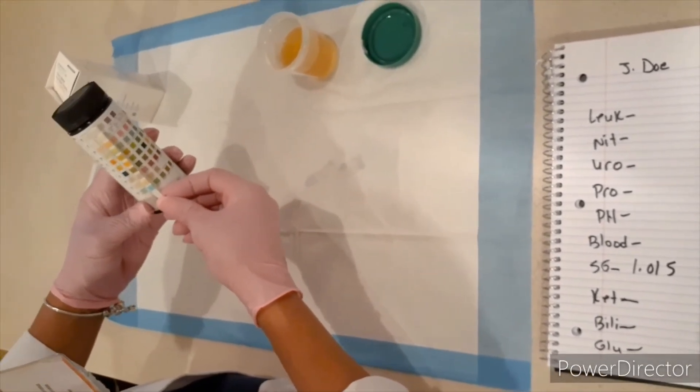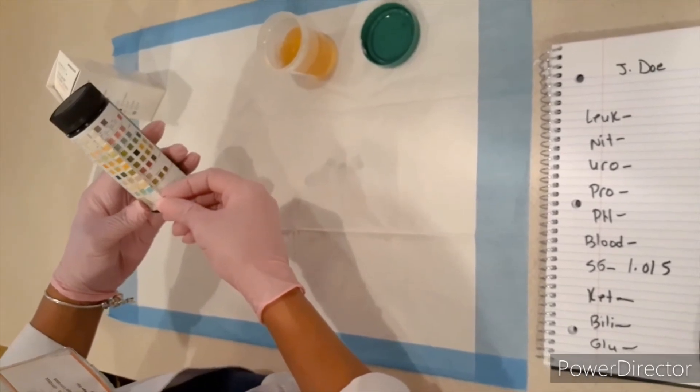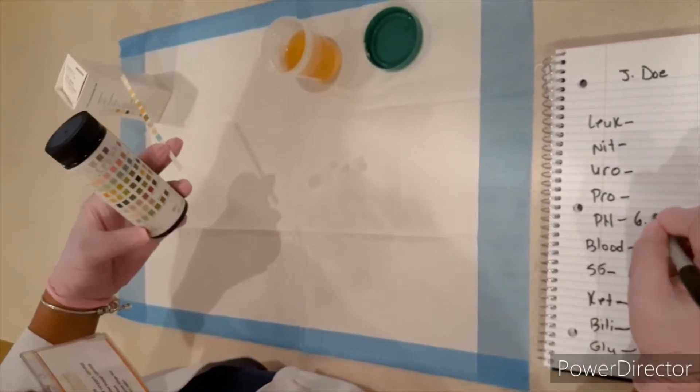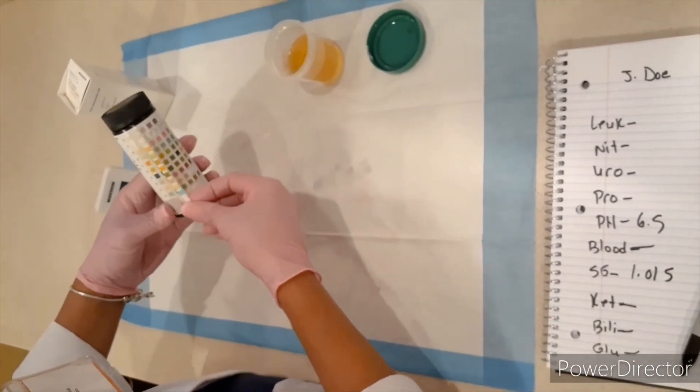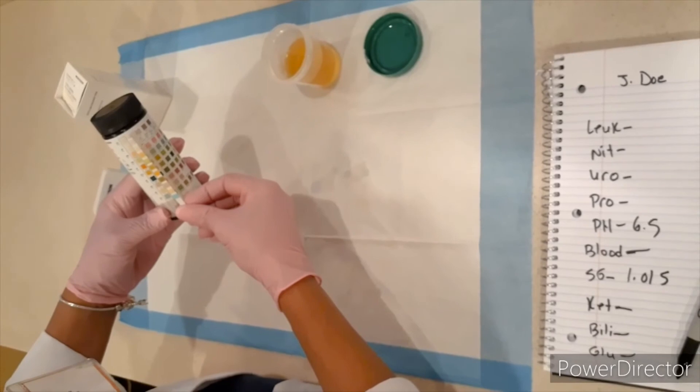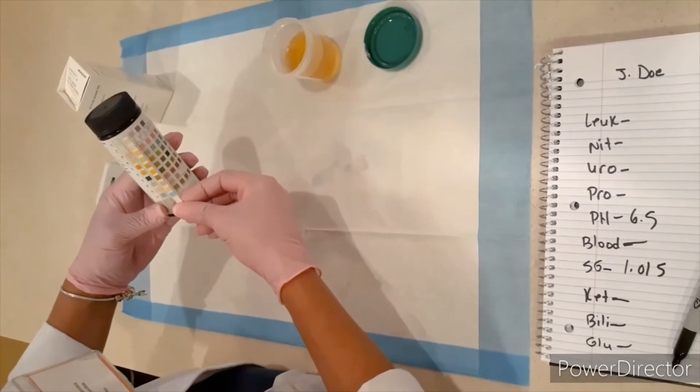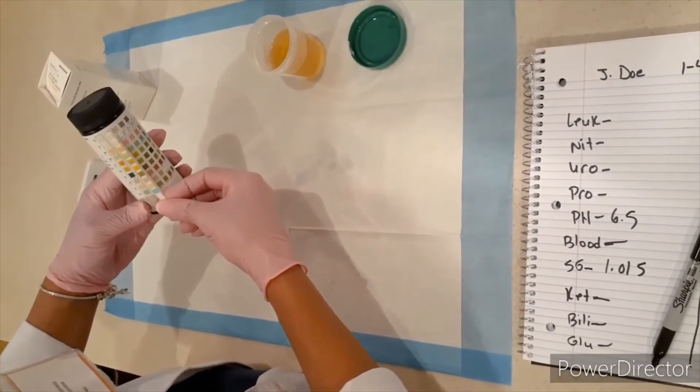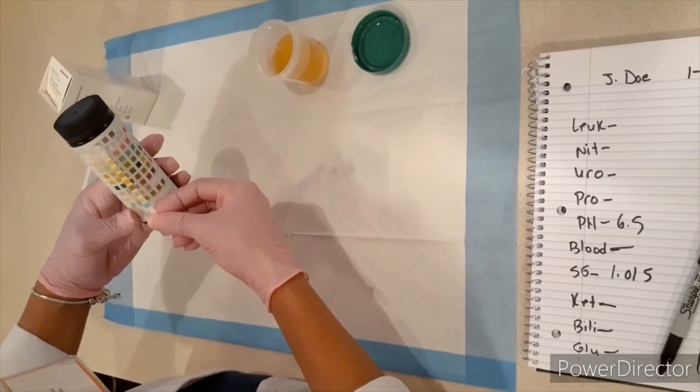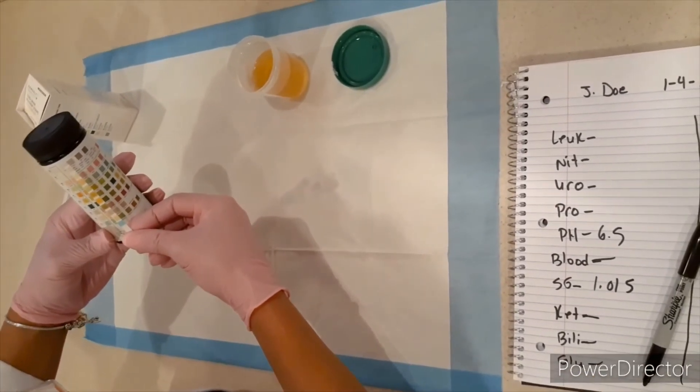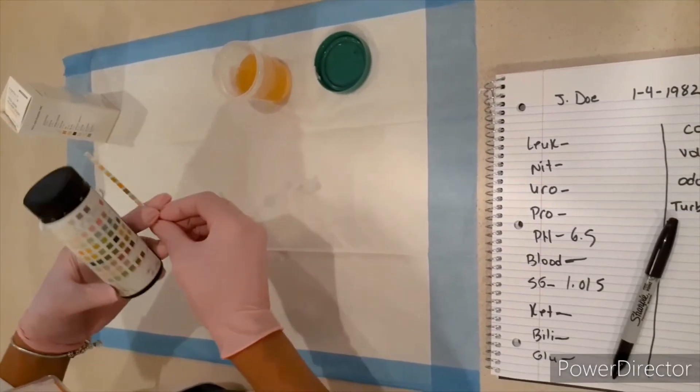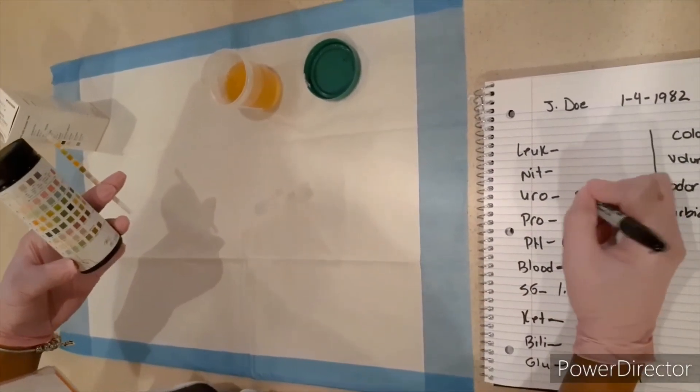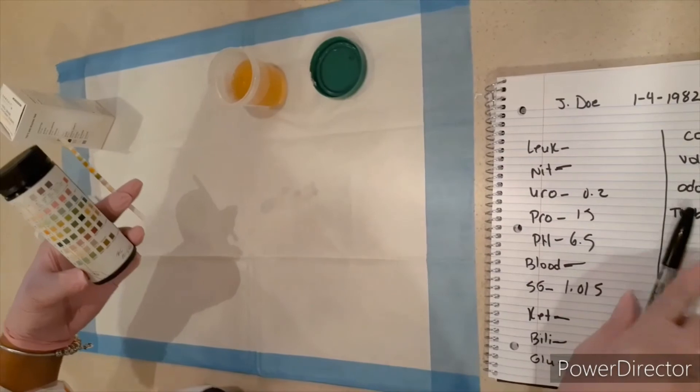So with blood, I have a negative. pH I have a 6.5. So I'm going to go ahead and write that down. Blood is negative. Protein, let's do pH. 6.5. Got that protein. We are at a 15 and a 0.2 urobilogen, nitrites negative. So we're going to say 15, 0.2 and negative nitrites.